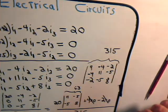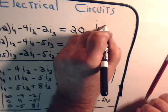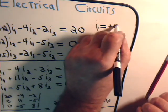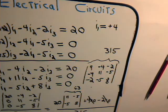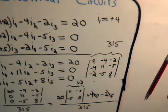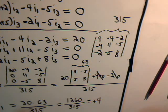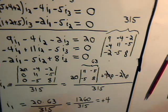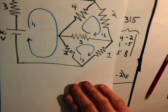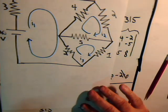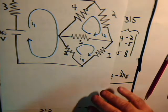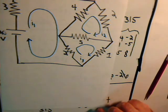So I1 equals plus 4. Using the same procedure — no tricks — we can determine I2 and I3. We don't have time to finish that in this video, so come back and join us in the next video where we'll wrap this up as fast as possible, find I2 and I3, and then go back to the original circuit to determine the currents through all the resistors.